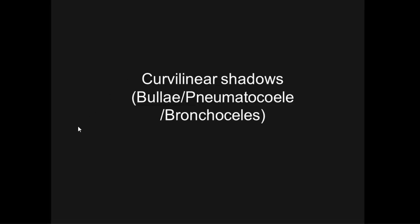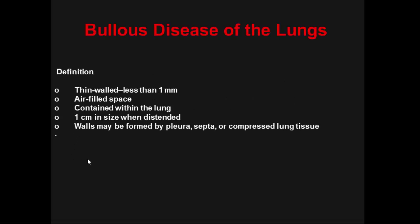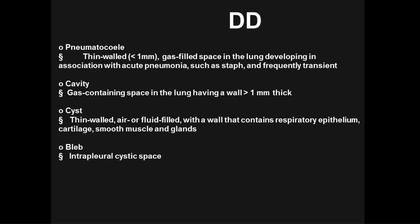Bullous disease of the lung: a bulla is a thin-walled, less-than-1-cm air-filled space contained within the lung, with wall formed by pleura, septa, or compressed lung tissue. Differential diagnosis includes pneumatocele, cavity, cyst, and bleb. A bleb is an intrapleural cystic space. A cavity is a gas-containing space with wall more than 1 mm thick. A cyst has a walled air- or fluid-filled space with respiratory epithelium, cartilage, smooth muscle, and glands. A pneumatocele has a wall less than 1 mm and is a gas-filled space following acute pneumonia such as Staph — frequently transient.